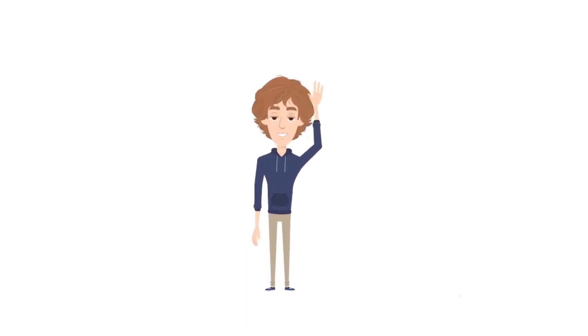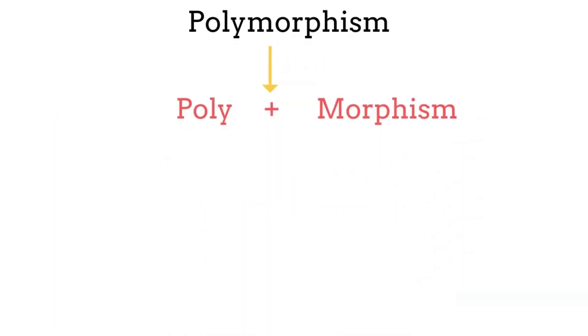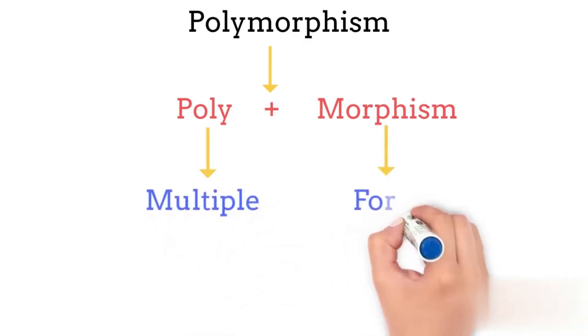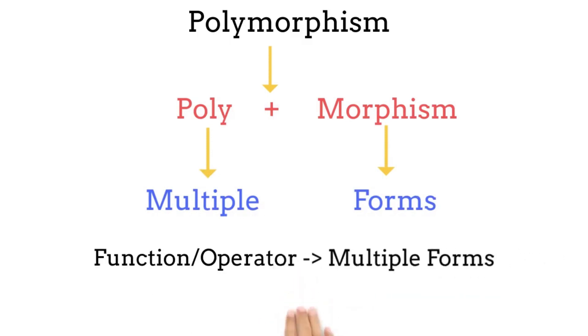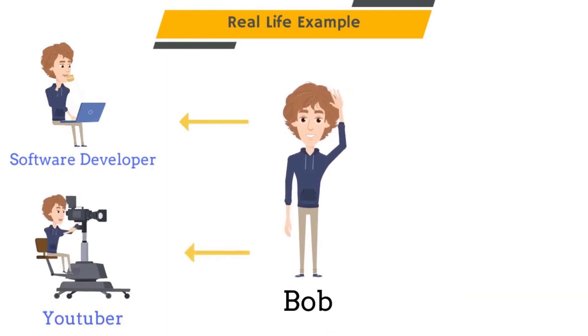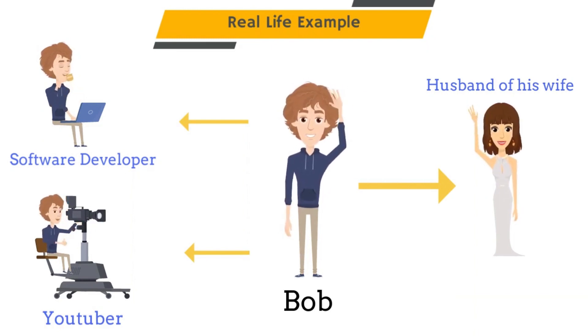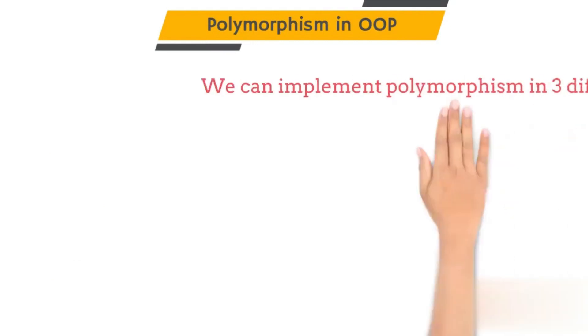Hello everyone, welcome to the Code Verse. In this video we will be learning about polymorphism. The word polymorphism is a combination of two words: poly, meaning multiple, and morphism, meaning form. So polymorphism in OOP means one function or operator can have multiple forms. Consider a real-life example of a person called Bob — Bob is a software developer, a YouTuber, and a husband, so he plays three different roles. That is a type of polymorphism.